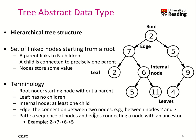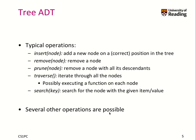The edge is the connection between two nodes — for example, between node 2 and node 7 there is an edge. And what is a path? It's a sequence of nodes and edges that connect a node with an ancestor. So here we have 2, 7, 6, 5 — a path that goes like this.